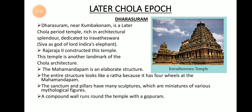Another important temple is located in Dharasuram, near Kumbakonam. This temple was built by the later Cholas during the later Chola period, and it is named the Airavateswara temple. It was a temple built for Lord Shiva, and there is also a statue of God Indra's elephant available in this temple. It was built by Raja Raja II, and it is another landmark of the great architectural achievements of the Chola empire.